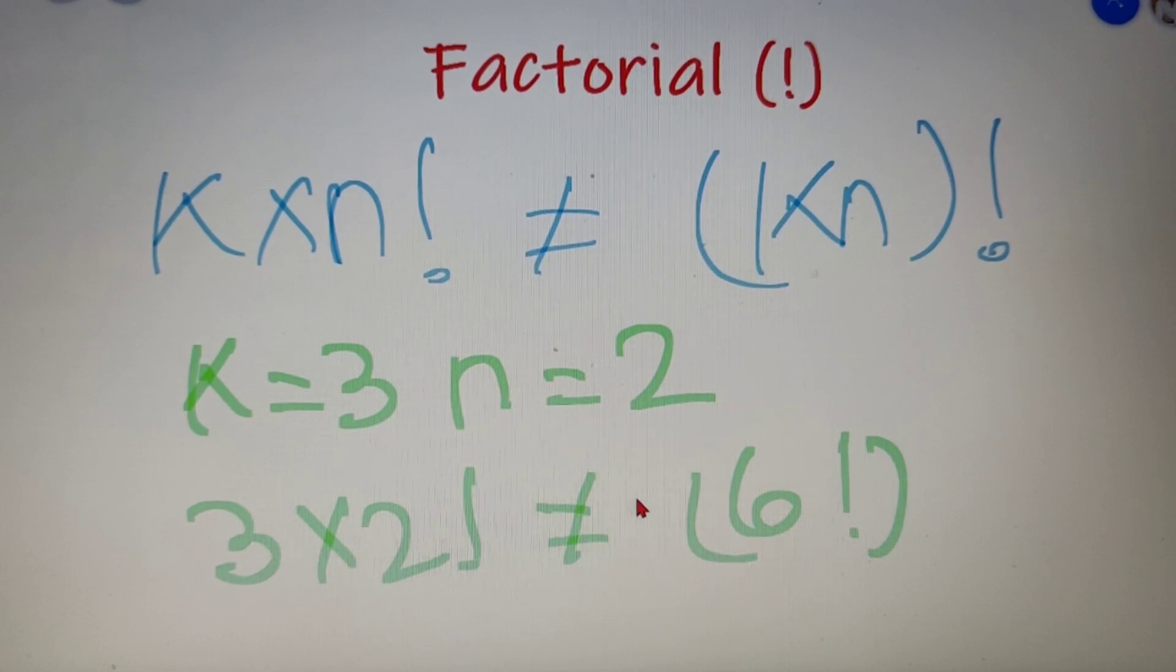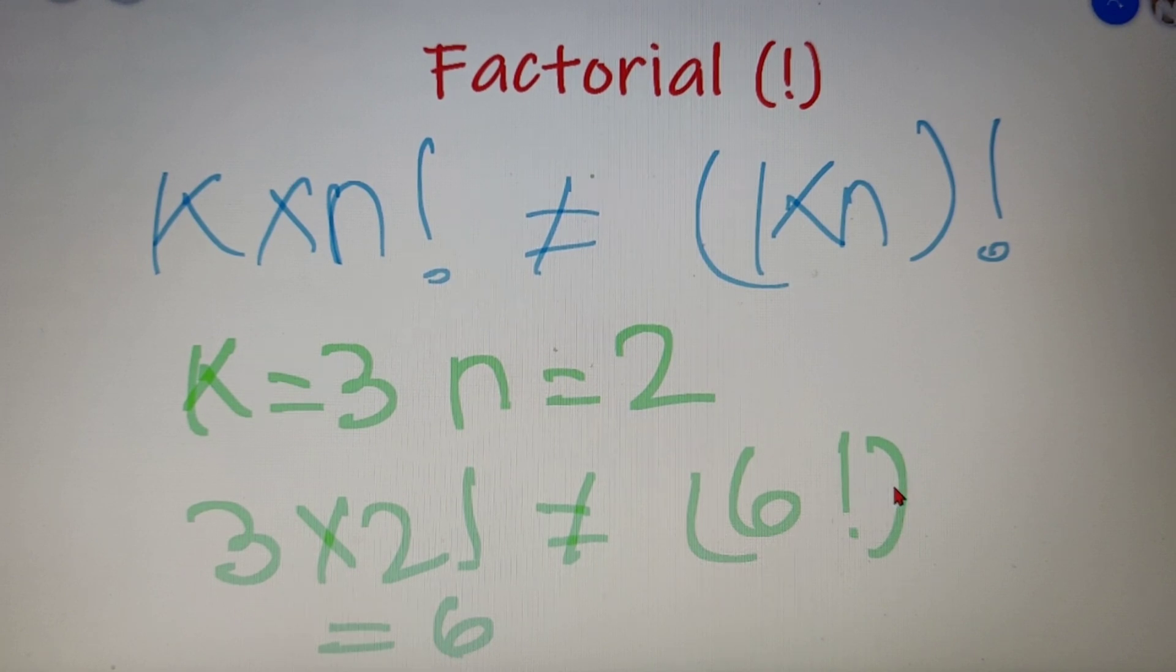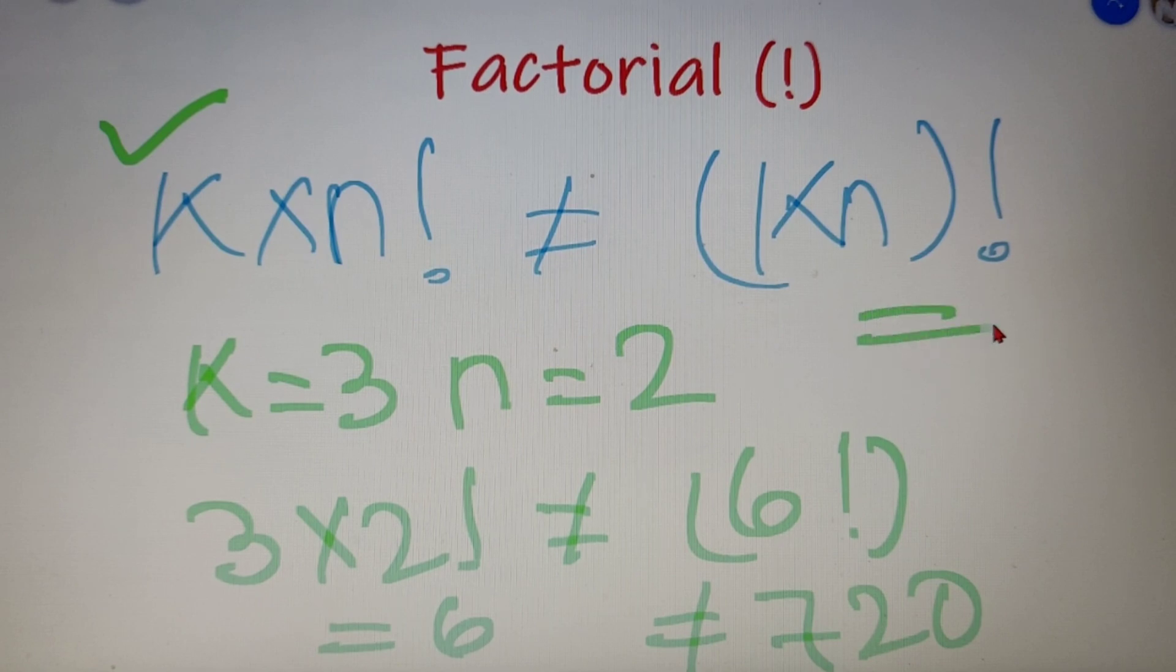So we know that 2 factorial is equal to 2. So 3 into 2 is equal to 6 and the value of 6 factorial upon calculation comes out to be 720. So I can say that they are not equal. So thus we have proof that k into n factorial is not equal to k n factorial.